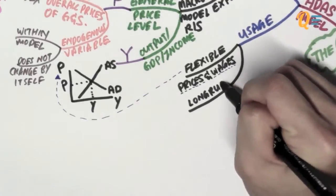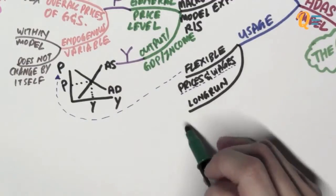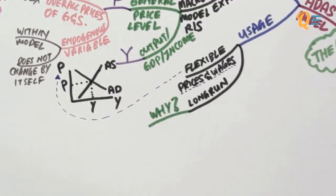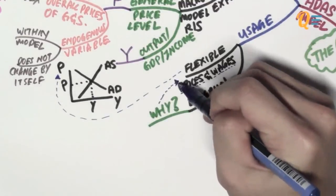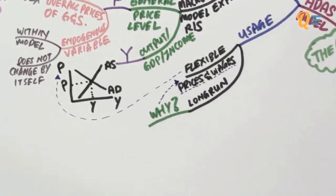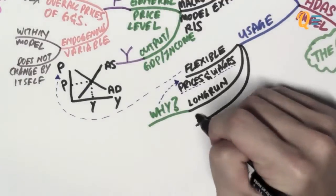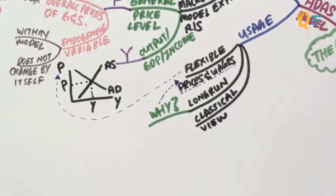Number two, you're going to need the ADES model when you're talking about the long run, because in the long run that's where prices and wages are flexible. And lastly, as discussed in chapter 12, we use the ADES model when we're trying to analyze the economy based on the classical view.